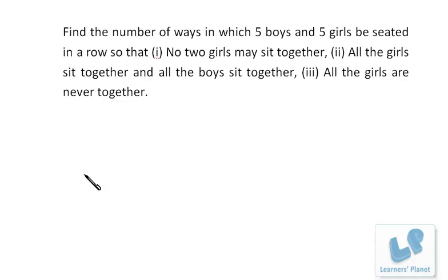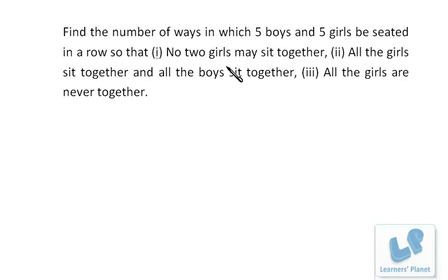Now, let's see this question. Various types of arrangements are there — three conditions. Let's take conditions one by one. Find the number of ways in which five boys and five girls can be seated in a row so that no two girls may sit together.